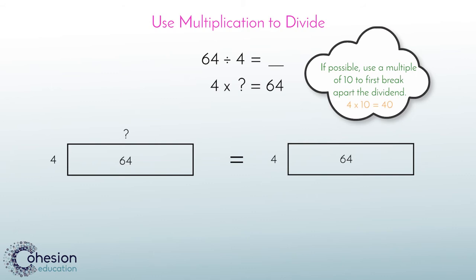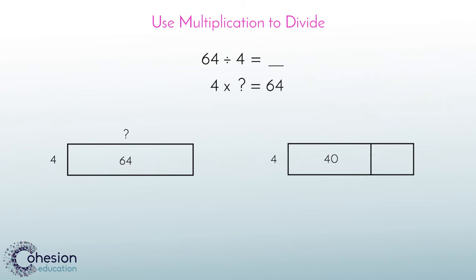If possible, it is always easiest to use a multiple of 10 to first break apart the dividend. In this case, we multiply the divisor 4, which gets us to 40. Our job is to represent 64. We have represented 40 of that amount. You can see we have now split our model into 40 and another number.